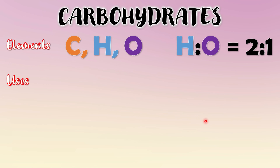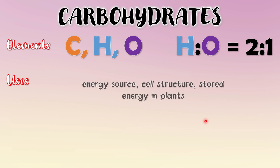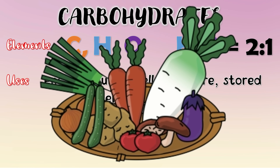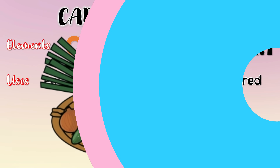Now let us look at the uses of carbohydrates in organisms. Carbohydrates are used as the main or primary energy source, especially in humans. They can also make up cell structures. In addition, they are used as stored energy in plants. From the vegetables that we eat, we are actually eating their stored energy in the form of starch, like potatoes and grains.